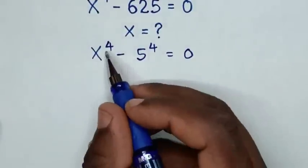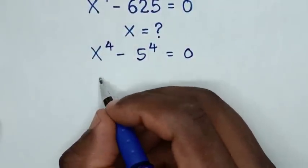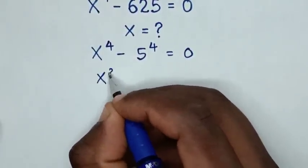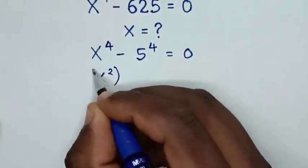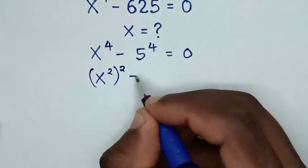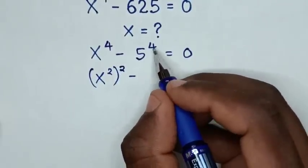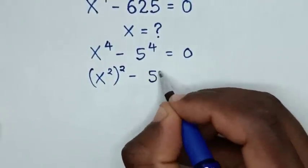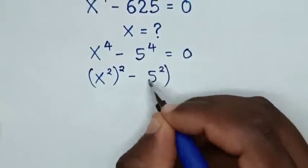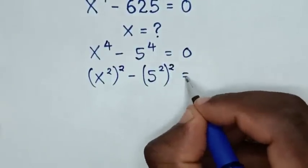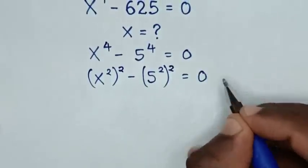Then x power 4, written as a square, is the same as x squared in brackets, squared. Then minus 5 power 4, written as a square, is the same as 5 squared in brackets, squared, equal to 0.